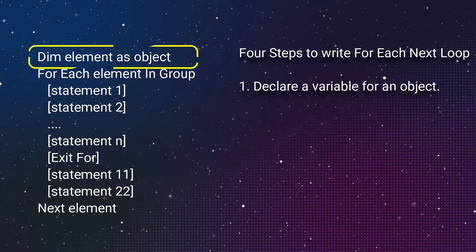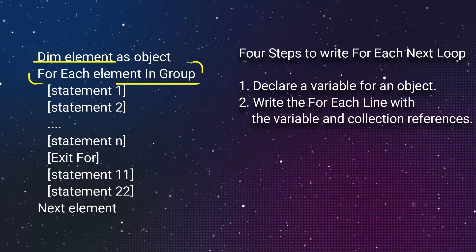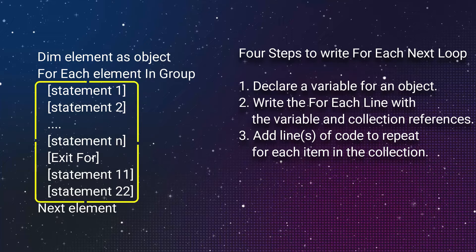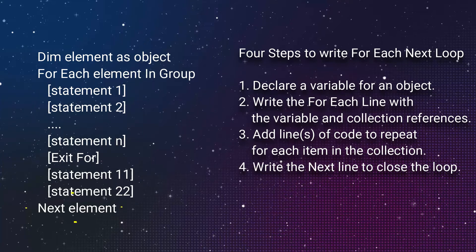Four steps to write For Each Next loop: 1. Declare a variable for an object. 2. Write the For Each line with the variable in collection references. 3. Add lines of code to repeat for each item in the collection. 4. Write the Next line to close the loop.